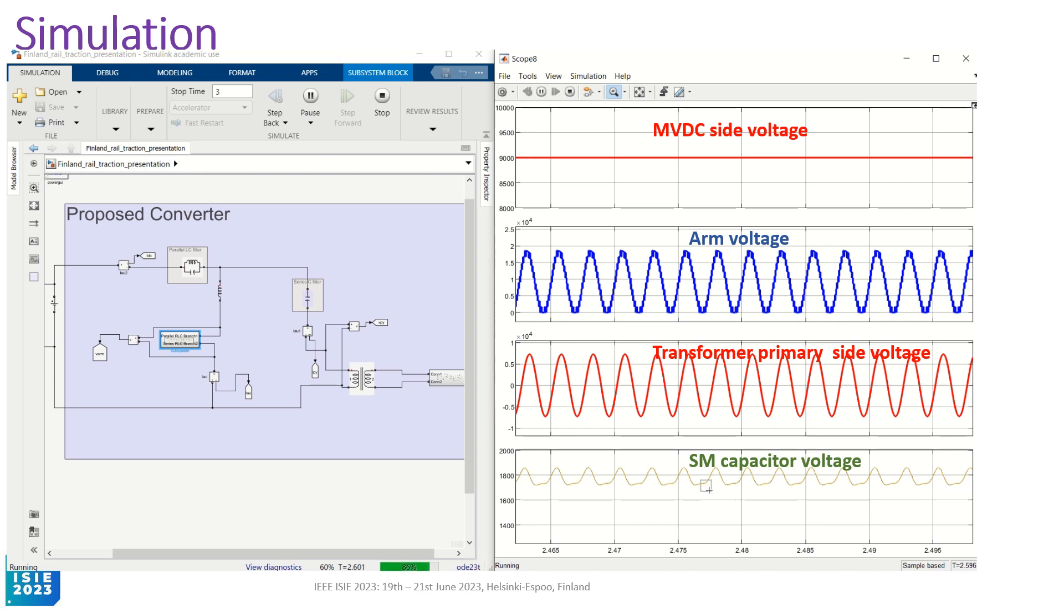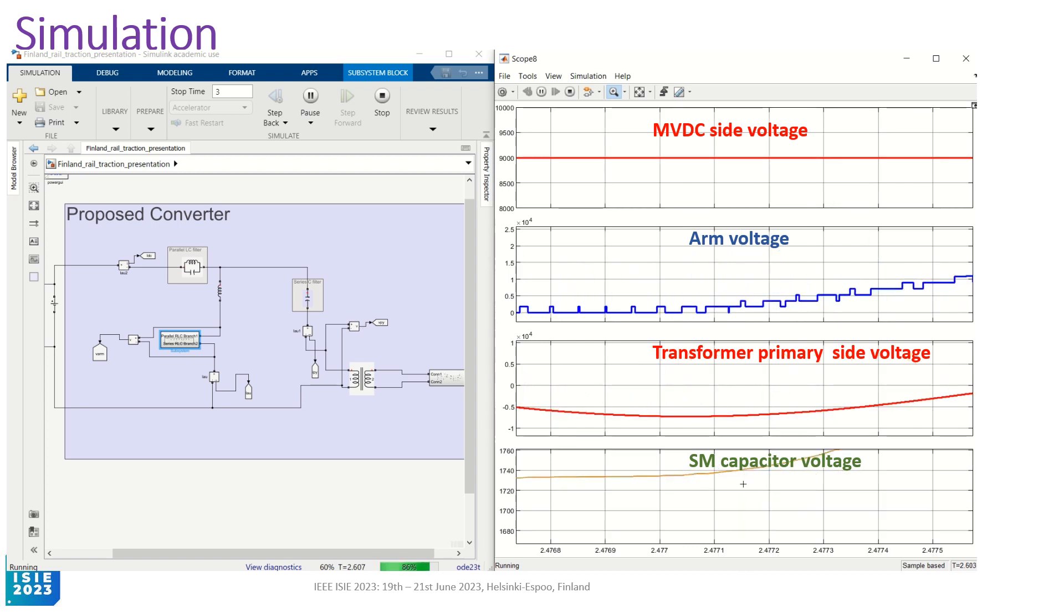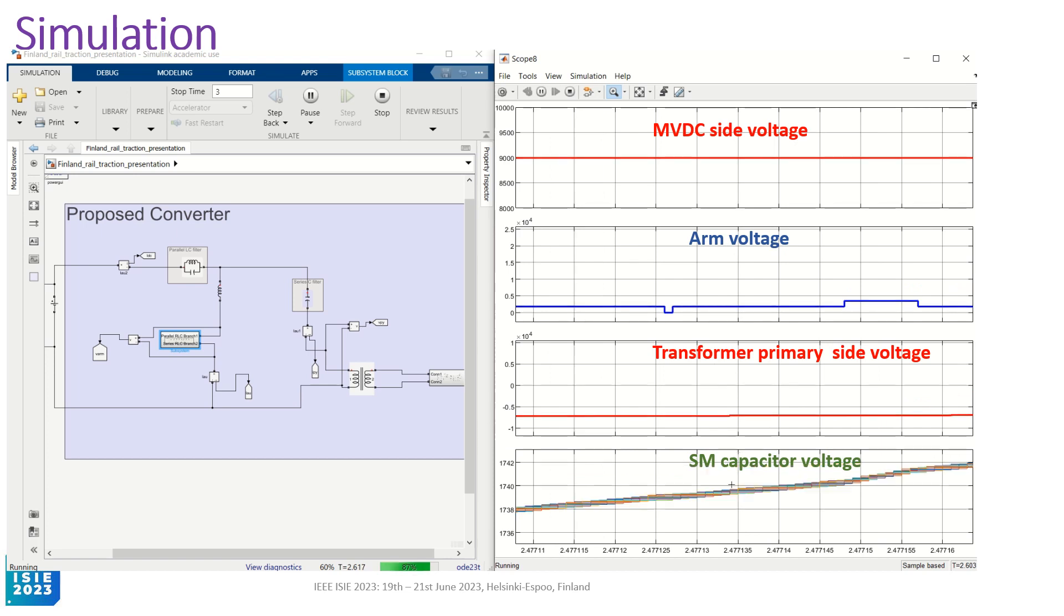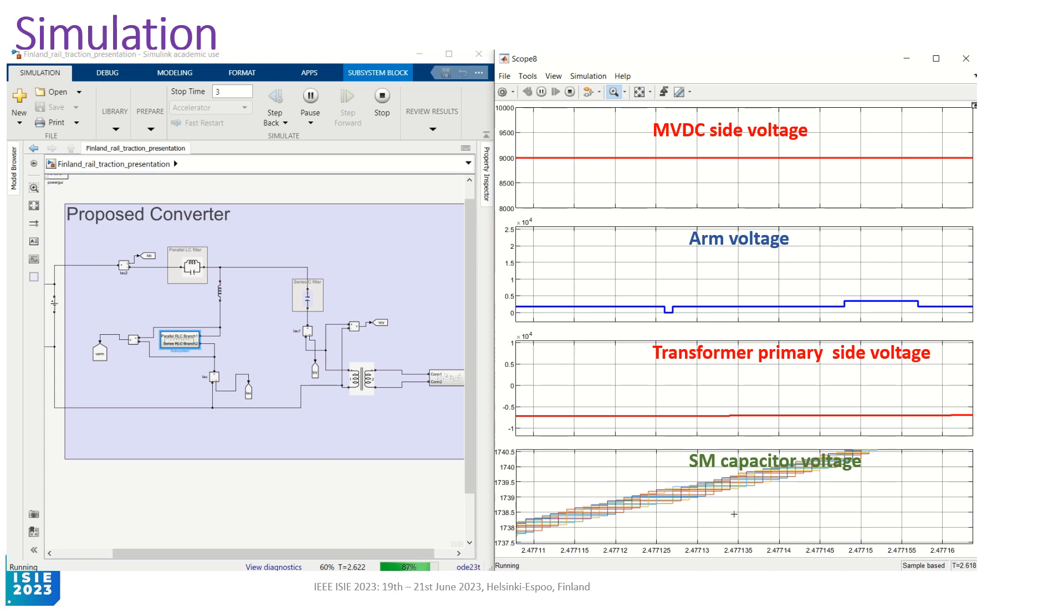Now we will zoom the sub-module capacitor voltages. You can see these sub-module capacitor voltages are perfectly balanced, which means the sorting algorithm is working and also the energy balancing is taking place.